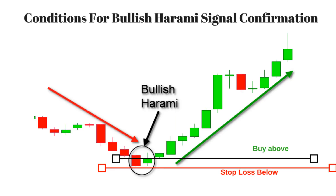Second condition: a larger bearish candle followed by a small bullish candle that is completely inside the range of the bearish candle. Third condition: after bullish harami formation, the trader should mark the last close or the midpoint of the larger bearish candle, whichever is higher. Next trading day, if it breaks the marked level, go for long and place stop loss below the bearish candle low.